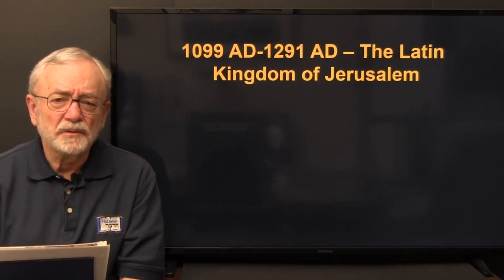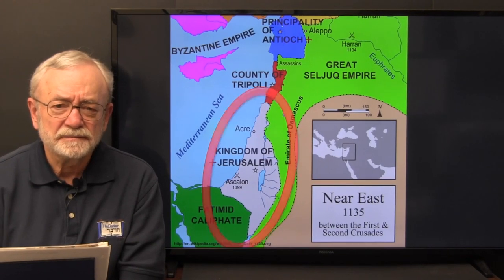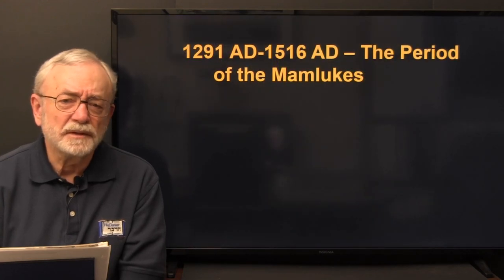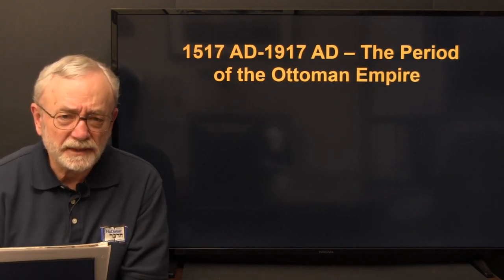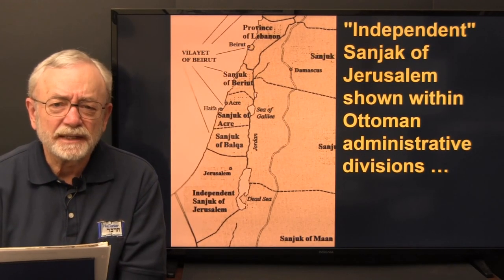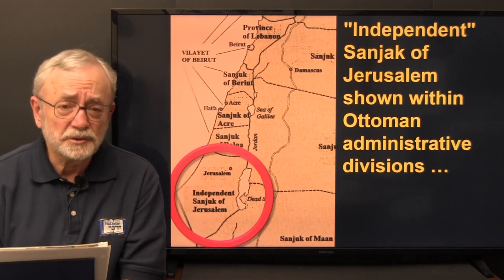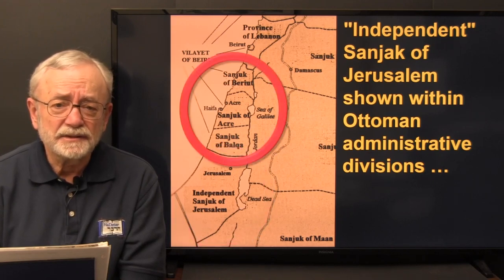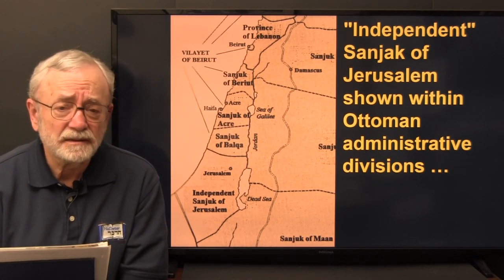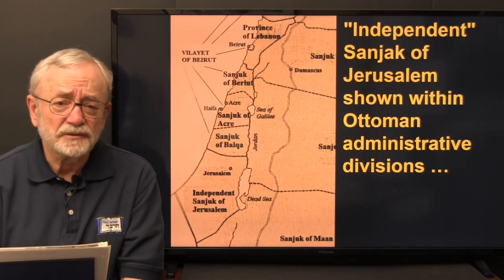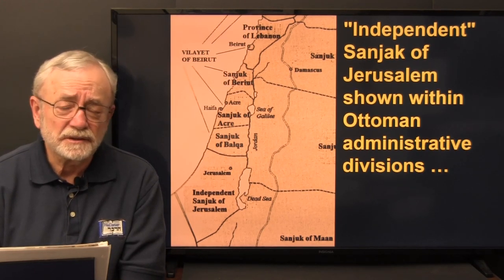Then came 1099 to 1291, the Latin Kingdom of Jerusalem — the Crusader period. From 1291 to 1516 was the Mamluk period. From 1517 to 1917 was the Ottoman Empire. Jerusalem was an independent sanjak within Ottoman administrative divisions, essentially Judea and the Negev, while Galilee belonged to the sanjaks of Balkha, Acre, and Beirut. The point is: there was no Palestinian state. This area was never an independent state unless it was under the Jewish people.